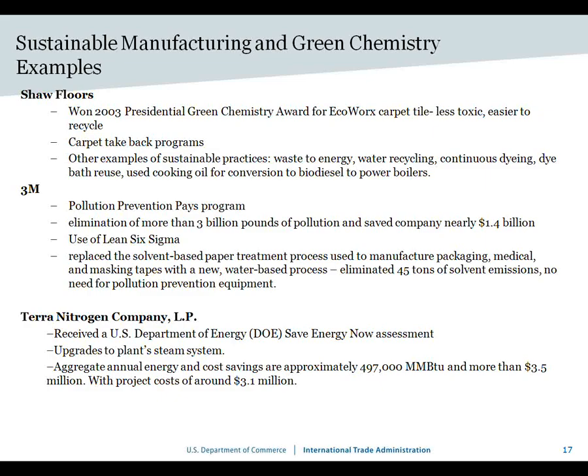A chemical company example is Terra Nitrogen Company, which had an ammonia plant that received an energy assessment from the Department of Energy's Save Energy Now program. It found improvements to the plant's steam system — steam systems being a big energy user in chemical companies. They implemented several suggestions from the assessment, saving annually about 497,000 billion BTUs and $3.5 million a year. The cost was only $3.1 million, so they had a payback period of about 11 months. They're now applying what they learned in that plant to other facilities across the company.